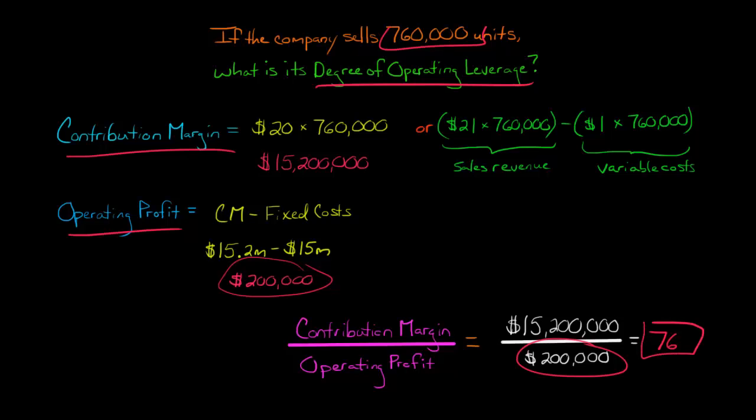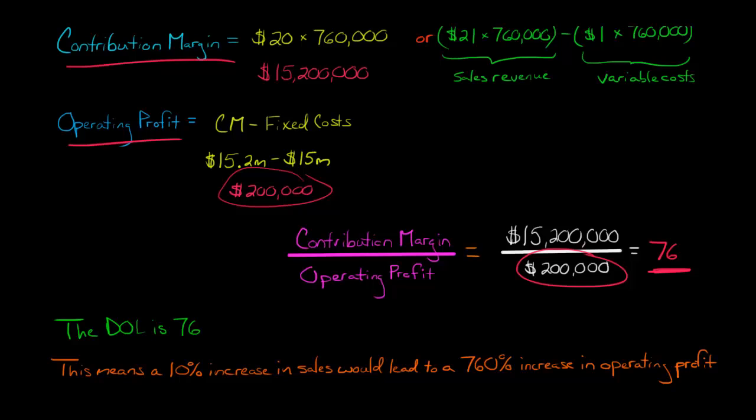So the degree of operating leverage is always just going to be a number. It's not a dollar value. So 76. What does this mean? Let's interpret this. So basically, let's say that somebody came to you and said, right now we're going to sell these 760,000 units. That's what we think is going to happen. But what if we increased our sales by 10%?